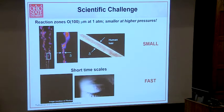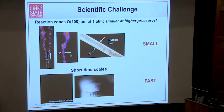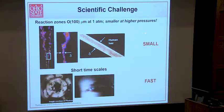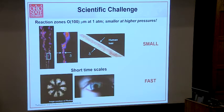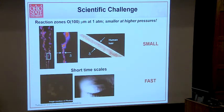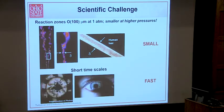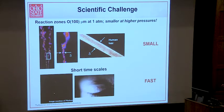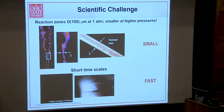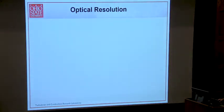Even at atmosphere, reaction zones can be on the order of the thickness of a human hair. They scale inversely with pressure, so as we go to higher pressures they get even narrower. The time scales — these cycles are much faster than a blink of an eye. So we have extremely small spatial scales and fast timescales. That's the environment we're working in.